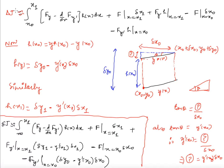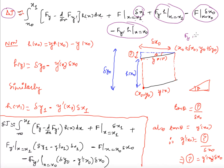After combining, δJ equals the integral from x₀ to x₁ of [f_y minus (d/dx)f_{y'}]·h(x) dx, plus f evaluated at x₁ times δx₁, minus f evaluated at x₀ times δx₀, plus f_{y'}·h evaluated at x₁, minus f_{y'}·h evaluated at x₀. This is the linear part, which is the variation itself.